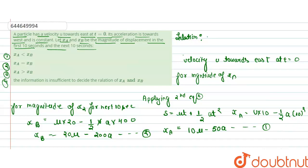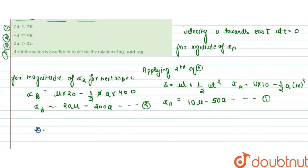We write down x_b equals x_20 minus x_a, that is 20u minus 200a minus 10u plus 50a. We get the value of x_b equals 10u minus 150a.